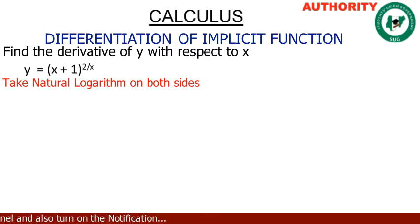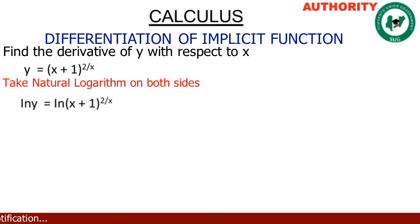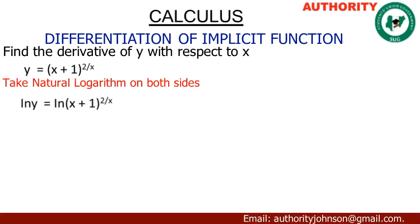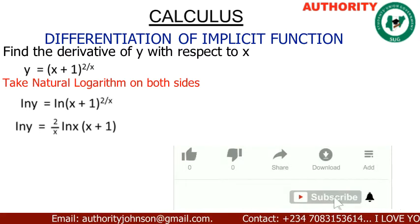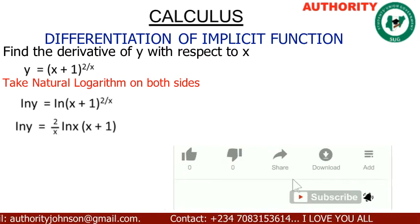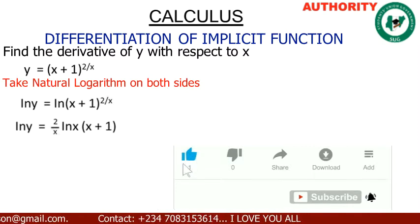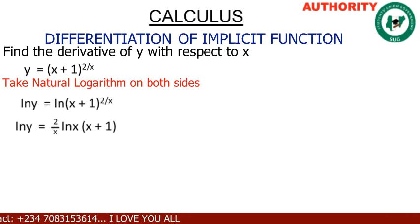We're going to take the natural logarithm on both sides, so we have ln(y) = ln[(x+1)^(2/x)]. Now we're going to bring the exponent down in front of ln, giving us ln(y) = (2/x) · ln(x+1).